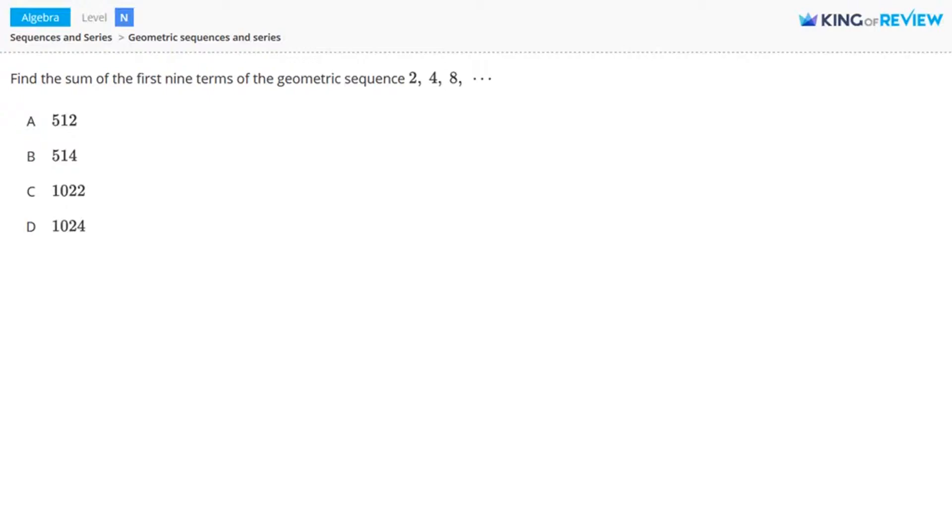So we have here a geometric sequence. What is this? A geometric sequence is a sequence or list of numbers or terms where the ratio of any term to the previous term is constant.